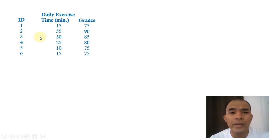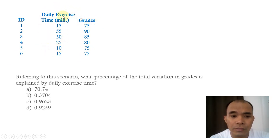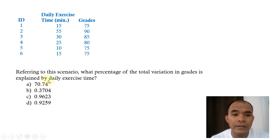What we wanted to do here is predict the grades with respect to our daily exercise time. So referring to this scenario, what percentage of total variation in grades is explained by the daily exercise time?